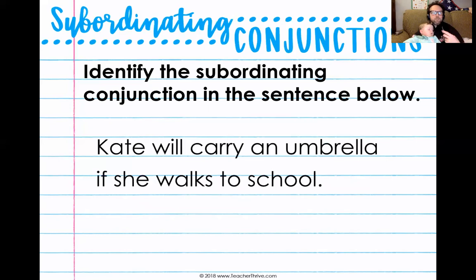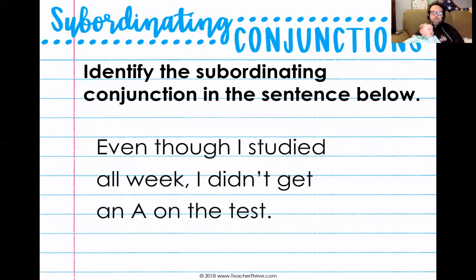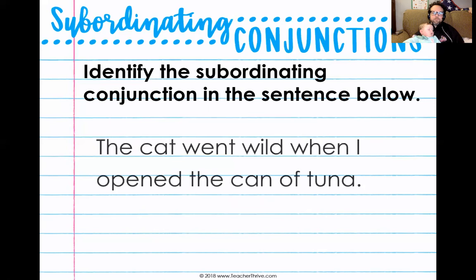Kate will carry an umbrella if she walks to school. Kate will carry an umbrella — if is the subordinating conjunction, which tells us a condition that needs to be made. She's only going to carry the umbrella if she walks to school. Even though I studied all week, I didn't get an A on the test. I didn't get an A on the test — the subordinating conjunction is even though. The cat went wild when I opened the can of tuna — the reason or the time is when I opened the can of tuna.